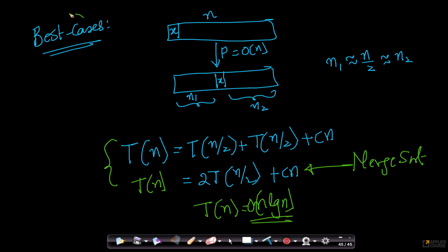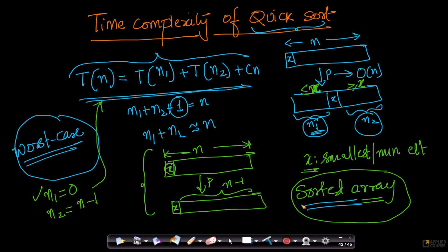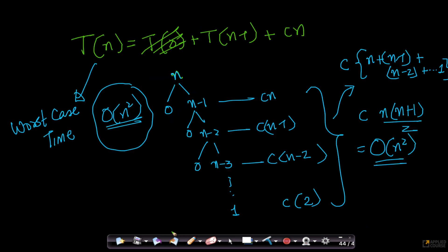Of course, merge sort works very differently from quicksort, but the recurrence relation is the same. The solution is T(n) = order of n log n. So the best case — when elements are broken into exactly half and half — gives time complexity exactly the same as merge sort: order of n log n.